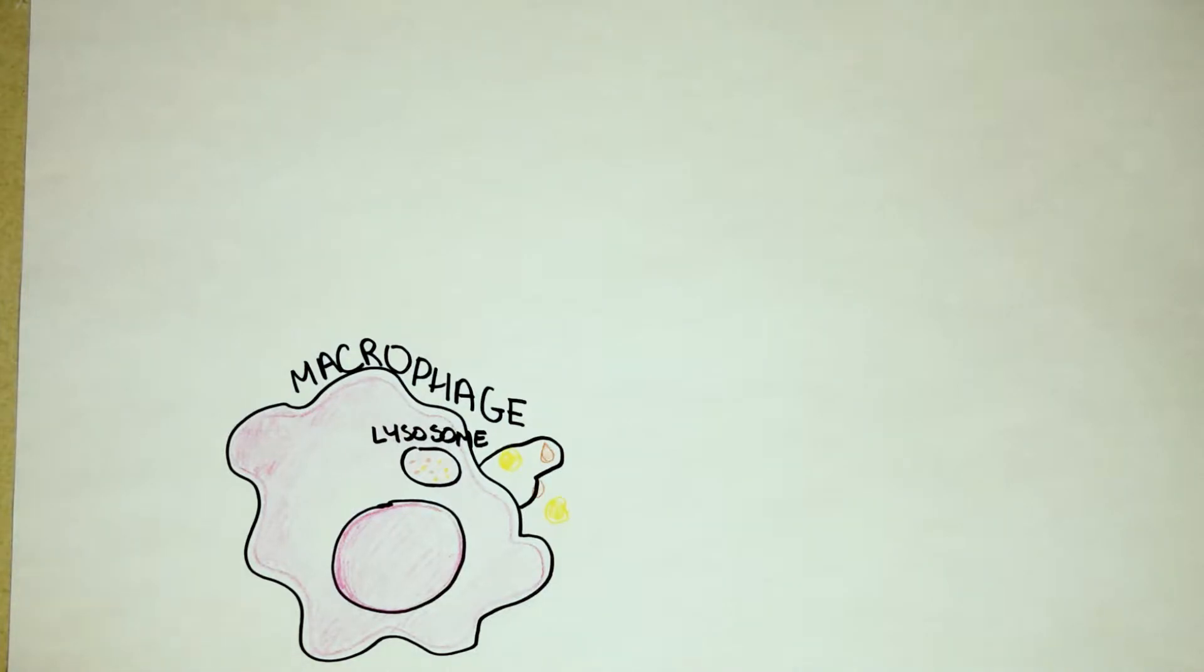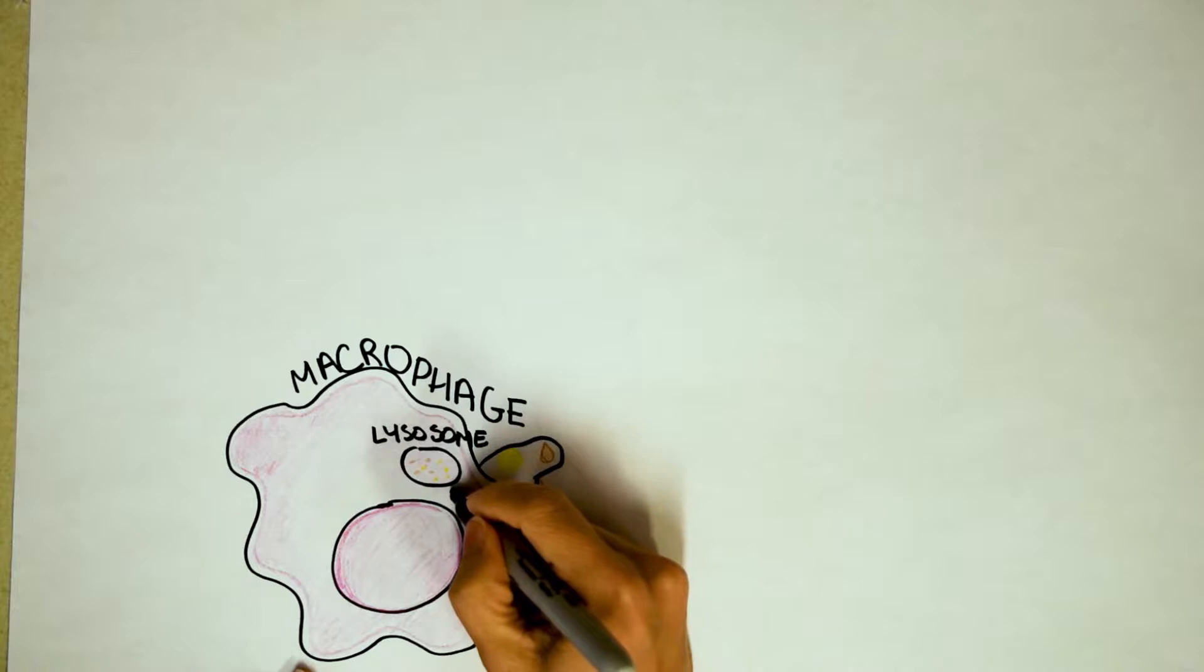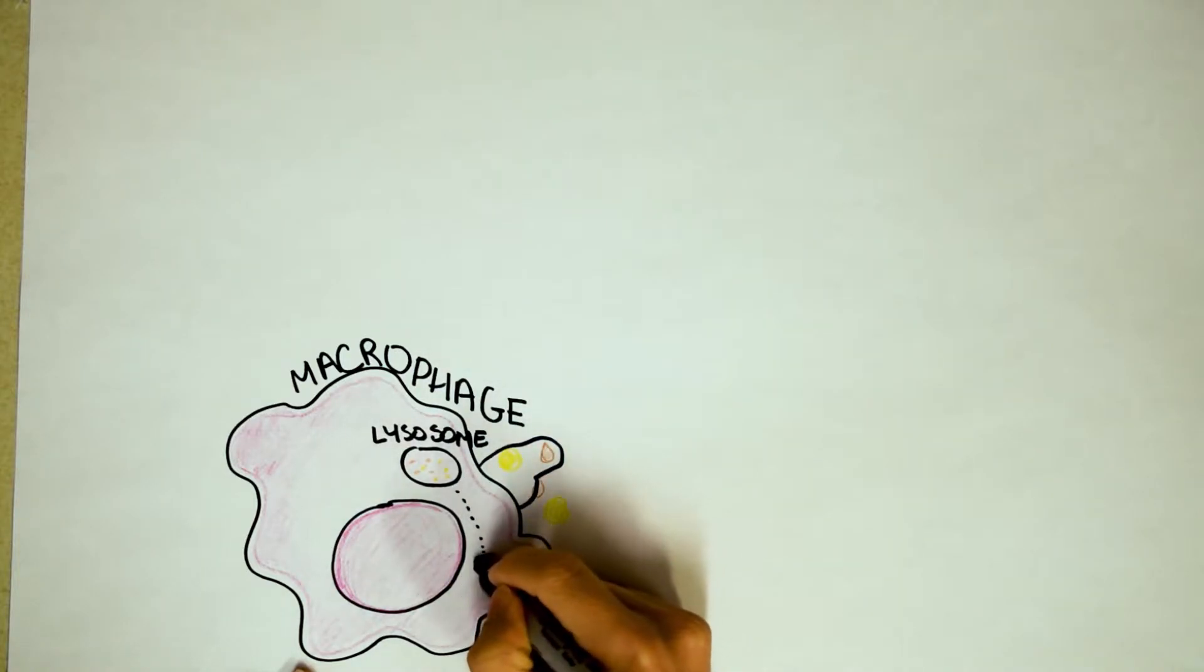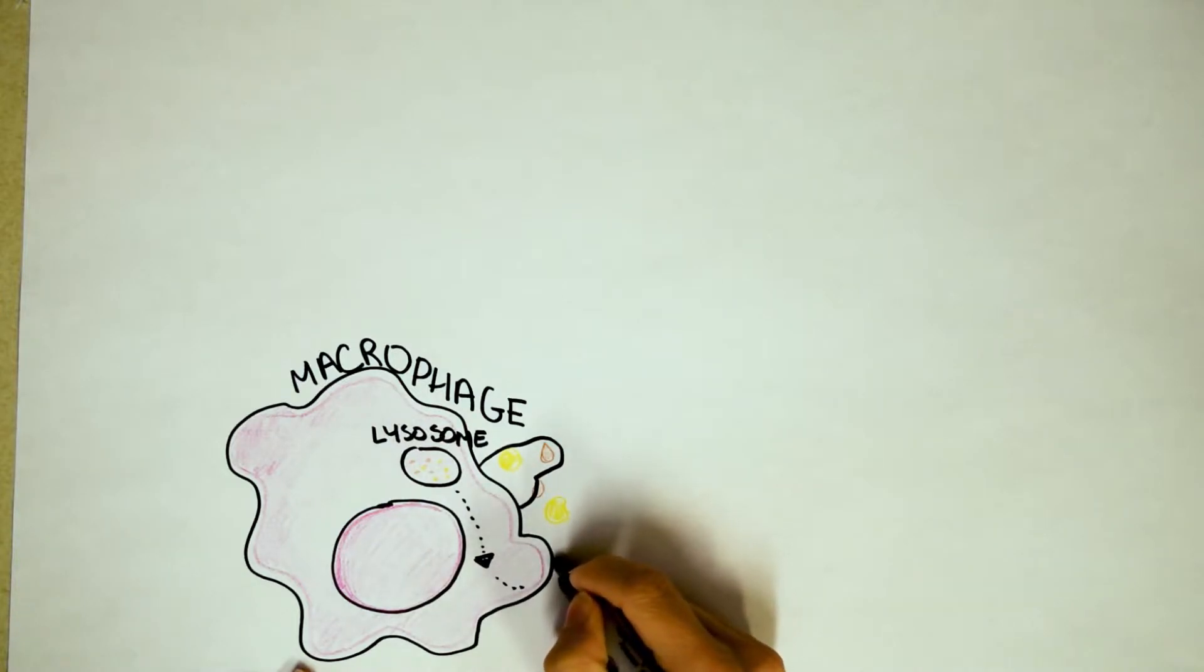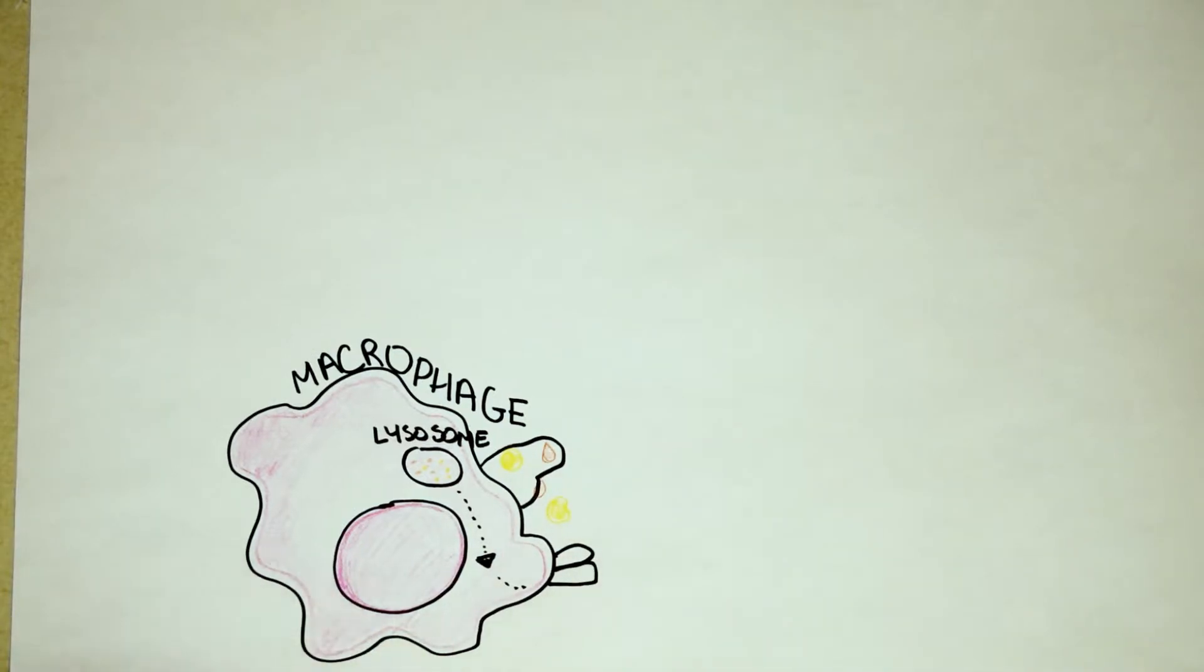Now, if you were otherwise completely healthy, this is what would happen next. Your macrophage would take some of these proteins and put them on the outside of the cell. Now why? Why would a macrophage bother to eat things and put them outside of your cell?